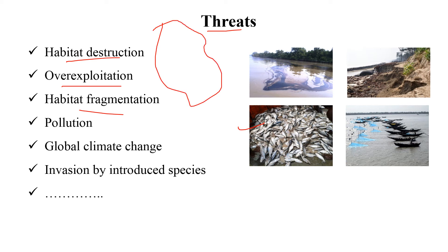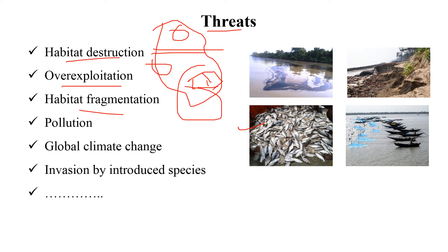Habitat fragmentation is another major threat — we build roads within forests, construct villages and towns within forested areas, fragmenting them. This plays a big role in the destruction of biological diversity and leads to human-animal conflict. Pollution is always one of the biggest threats to any kind of biological diversity. Global climate change is a key issue today — climate change is altering everything from habitats to physical conditions.